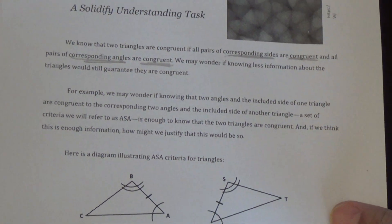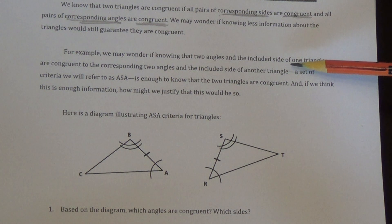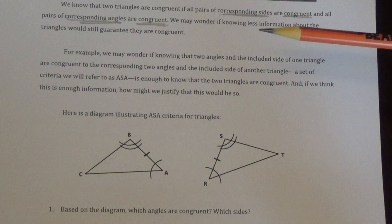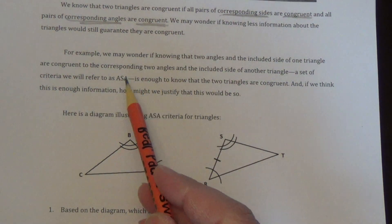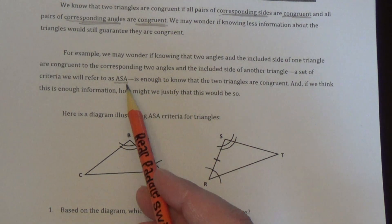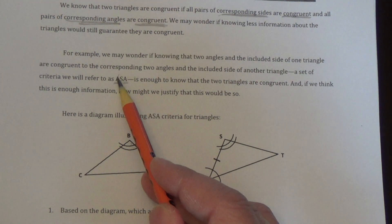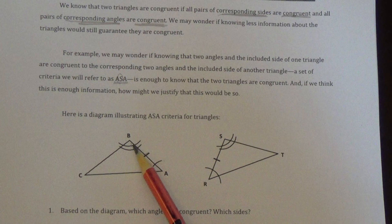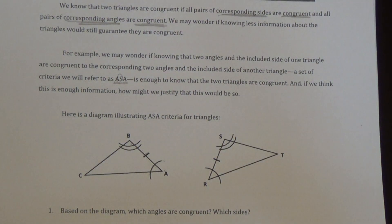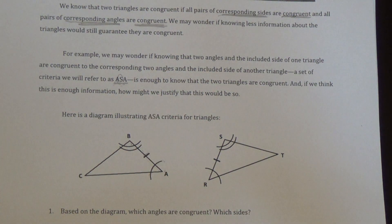For example, we may wonder if knowing that two angles and the included side of one triangle are congruent to the corresponding two angles and the included side of another triangle — a set of criteria we call ASA — is enough. We have an angle, then a side, and then the very next angle. Notice how the side is in between the angles in the abbreviation A-S-A, because this side lies in between two angles. Would knowing those three things be enough to know that the triangles are in fact congruent?